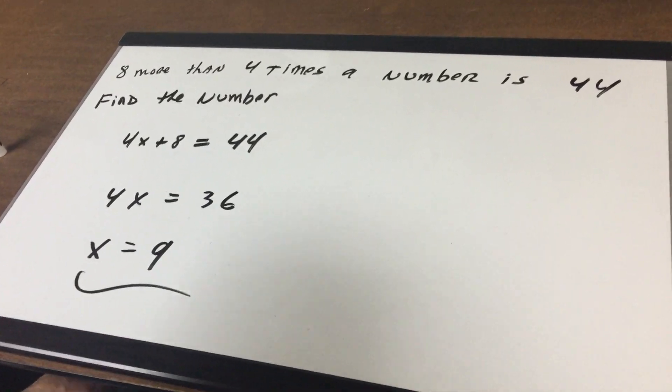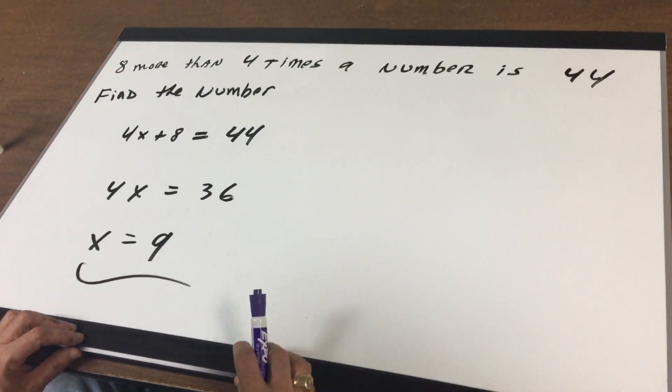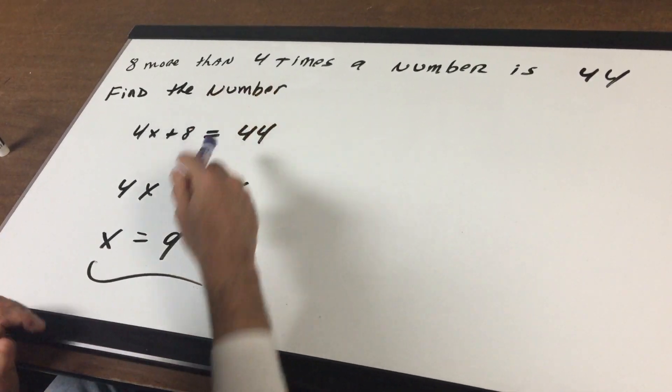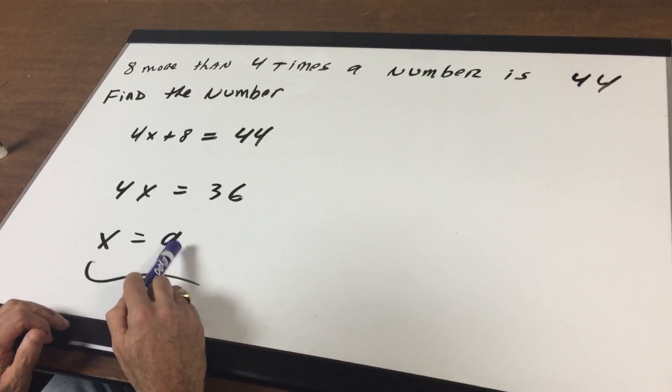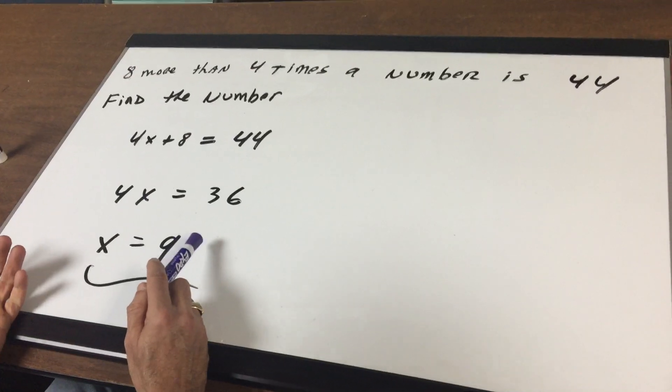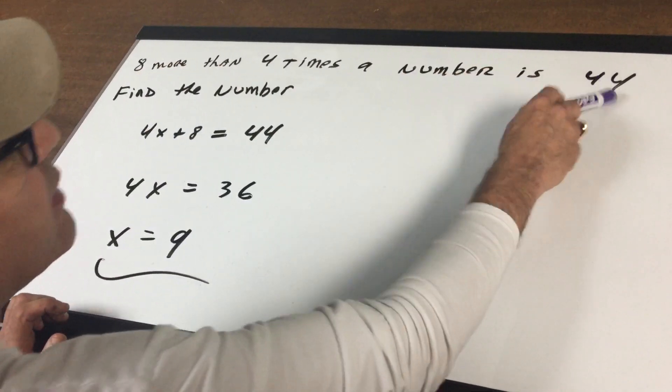You can always check on a multiple choice exam because if you think the number is correct then just work it backwards. If you went four times this number that would give you 36 and then eight more gives you the 44.